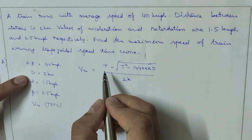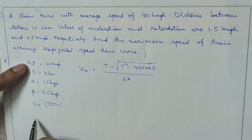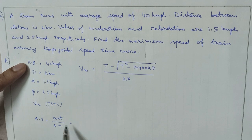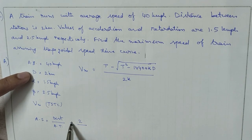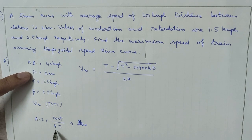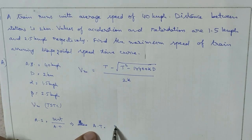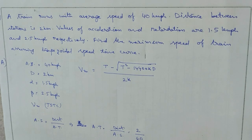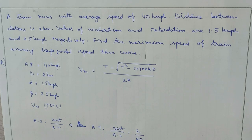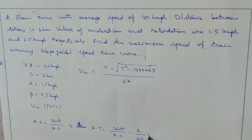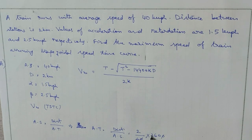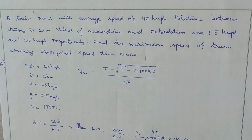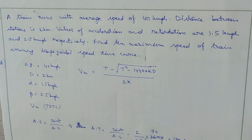We first find actual time T. Average speed = distance ÷ actual time, so actual time = distance ÷ average speed = 2 km ÷ 40 kmph × 3600 = 180 seconds. So T = 180 seconds.